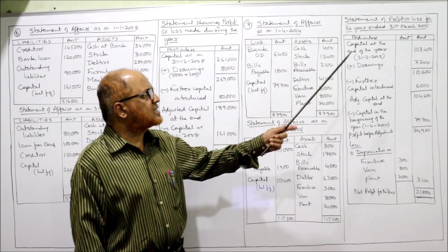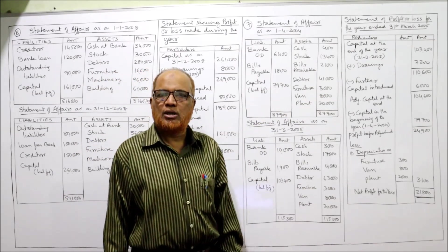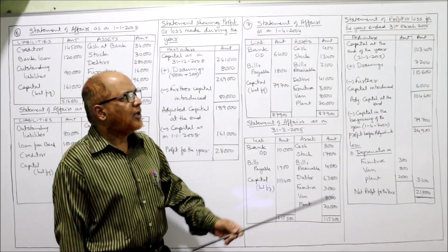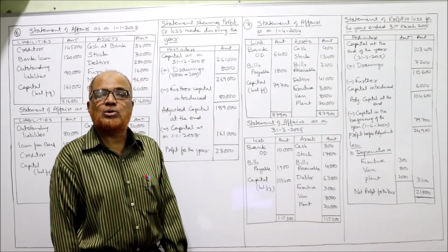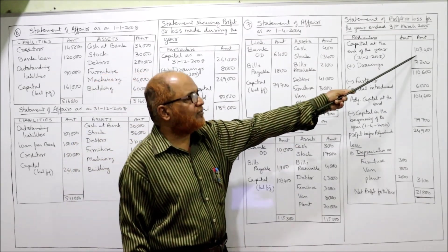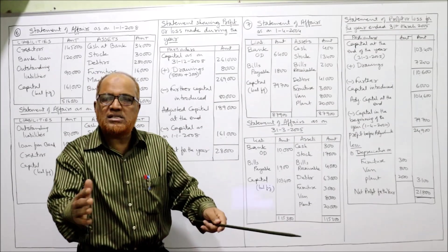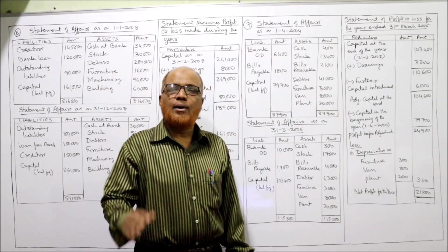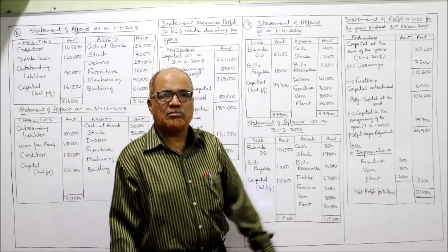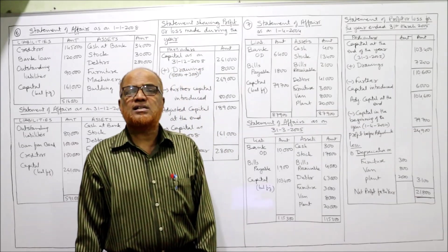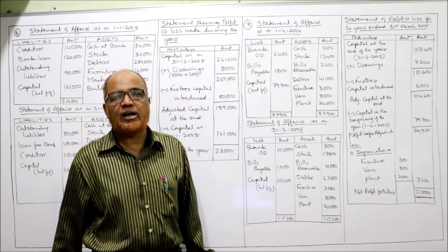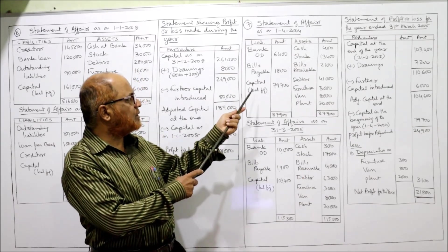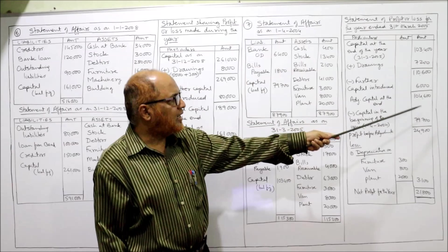We have opening capital of 79,700 and closing capital of 1,03,400. Statement of profit or loss for year ending 31st March 2005: capital at end 1,03,400. Add drawings of 7,200; total 1,10,600. Deduct further capital introduced of 6,000 to get adjusted capital of 1,04,600. Deduct opening capital of 79,700. Profit before adjustments is 24,900.